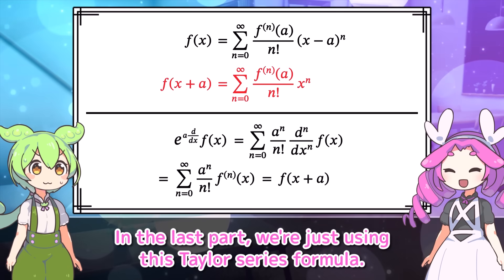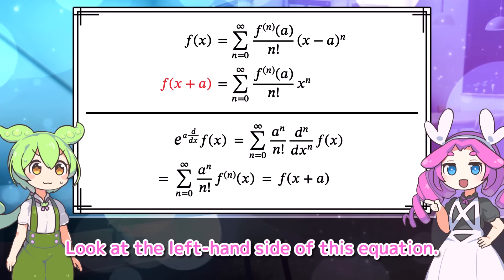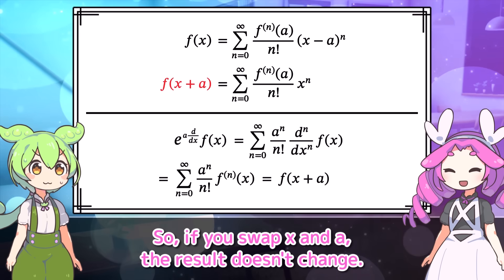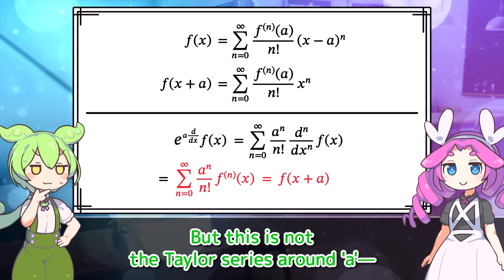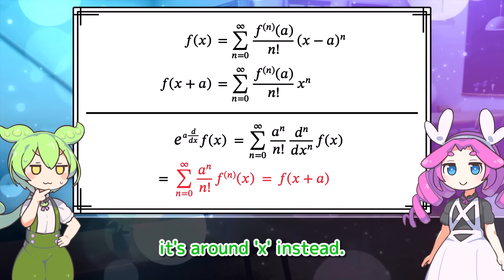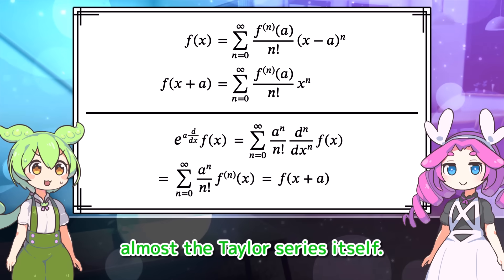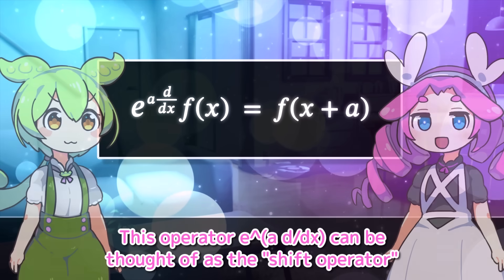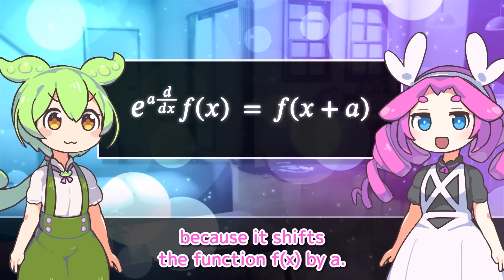In the last part, we're just using this Taylor series formula. But it looks a bit different. Look at the left-hand side of this equation — it's a symmetric expression with respect to X and A. So if you swap X and A, the result doesn't change. If you swap X and A, the last equality holds. But this is not the Taylor series around A — it's around X instead. Essentially this problem is almost the Taylor series itself. This operator E to the A·D by DX can be thought of as the shift operator, because it shifts the function F of X by A.